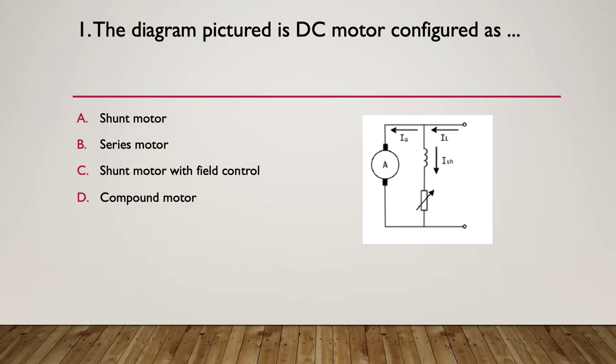So number one, the diagram pictured is a DC motor configured as what kind of motor? A, a shunt motor, B, a series motor, C, a shunt motor with field control, or D, a compound motor.